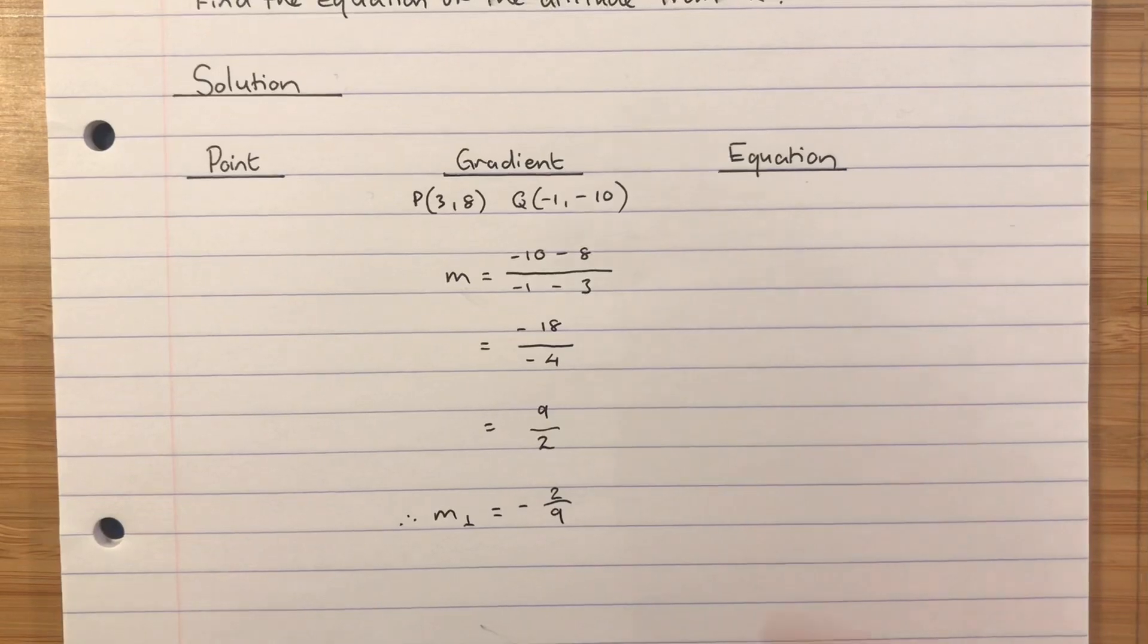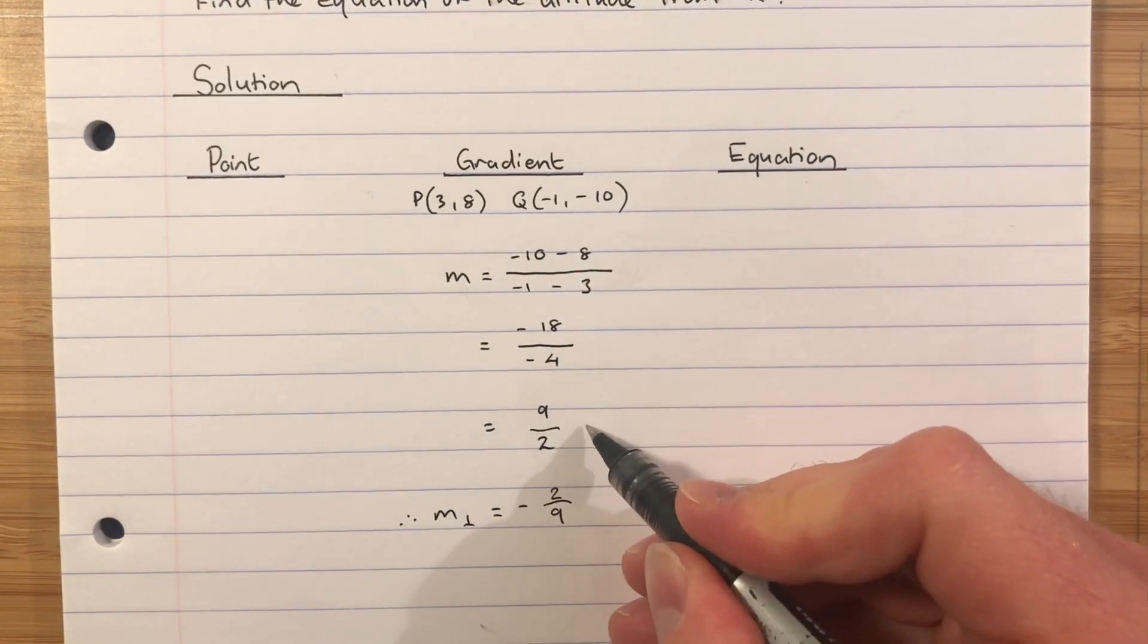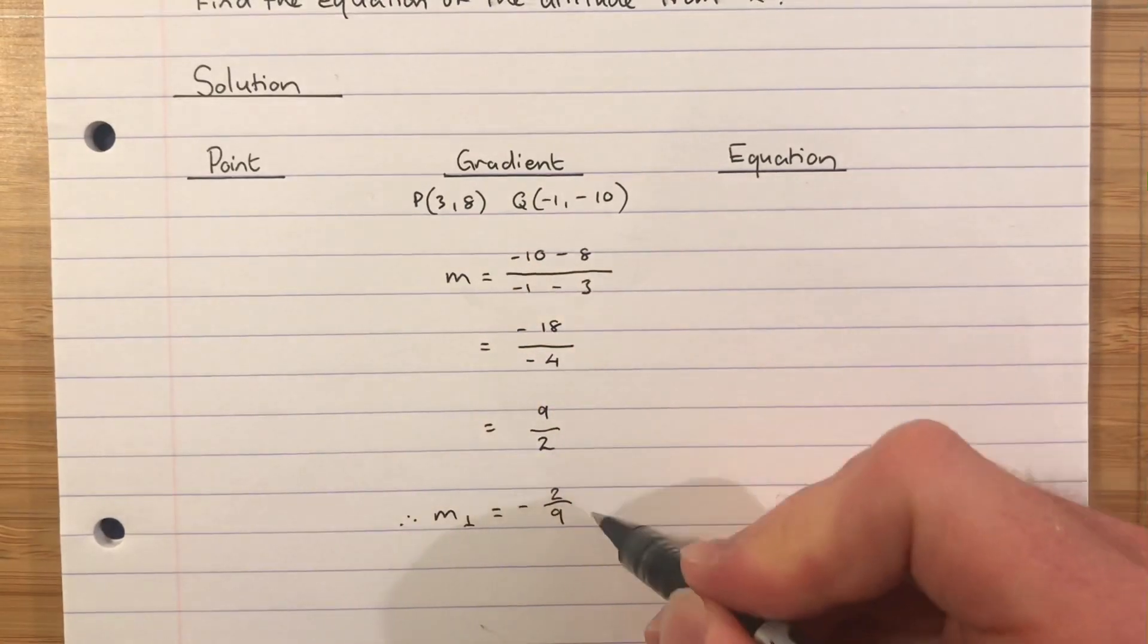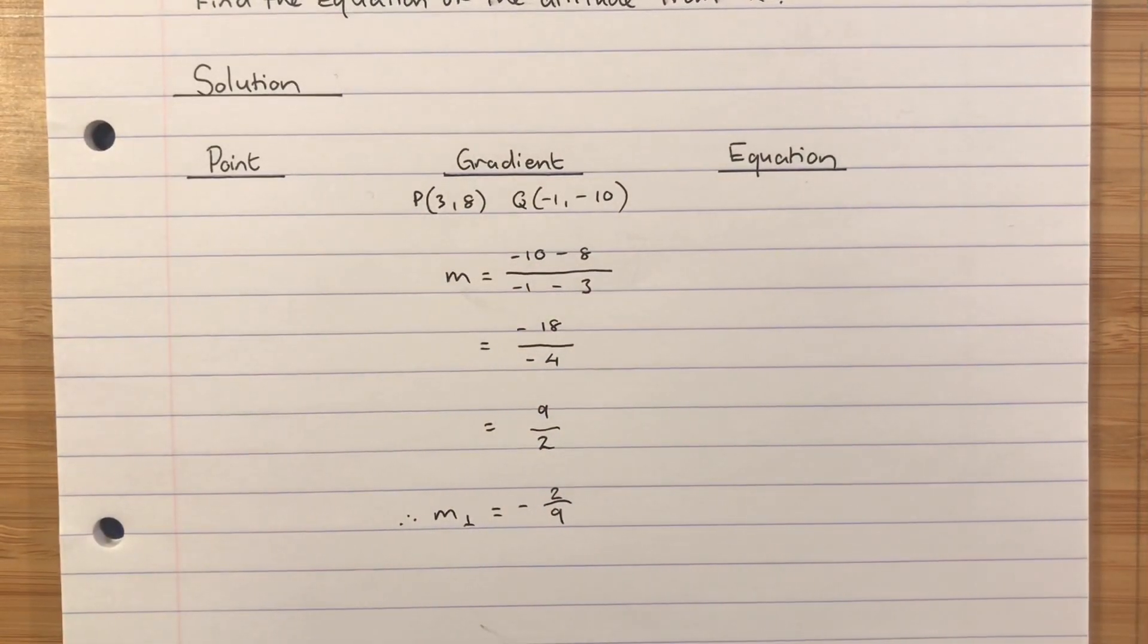Okay, so that gets me mark 1 and mark 2. Mark 1 for finding the correct gradient between P and Q, mark 2 for establishing that I have to find the negative reciprocal of that gradient.